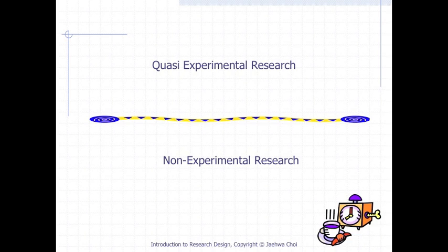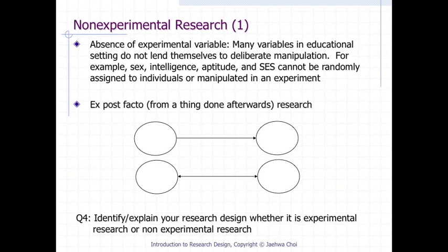Non-experimental research design is a research design without any experimental variable. Many variables in educational settings — such as sex, intelligence, aptitude, and SES — cannot be randomly assigned or manipulated. Consequently, much social and behavioral research is non-experimental, also known as ex-post-facto research. Both causal and correlational types of research can also be non-experimental research.